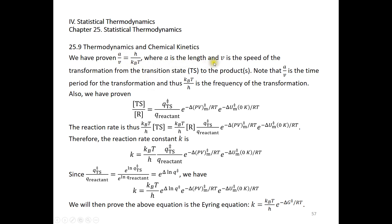Here A is the length and v is the speed of the transformation from the transition state to the products. The transition state must move a distance A with speed v, so A over v is the time period for the transformation. Taking the reciprocal, v over A = k_B T over h, which is the frequency of the transformation from the transition state to the product.